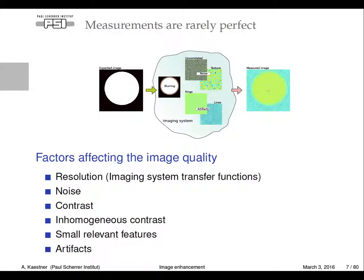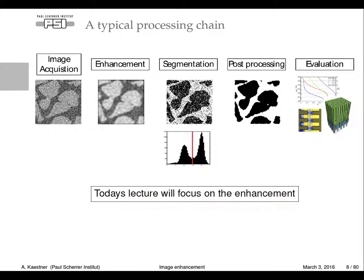Unfortunately our measurements are rarely perfect. This is what we would expect - this circle. That's in the real world. Unfortunately when we measure it, we add blurring from optical components and scintillators. Then we have noise - uncorrelated or texture. Then we have artifacts like ring artifacts and line artifacts. Everything is baked together into one image. This lecture is about getting the information a little bit better so you can continue processing.